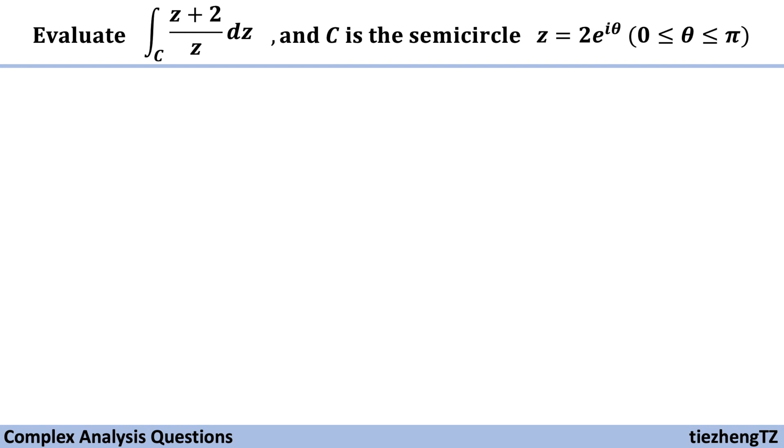This question is to evaluate this integral, z plus 2 over z dz, on the contour C, where C is the semicircle z equals 2 times e to the power of i theta, where theta is from 0 to pi.